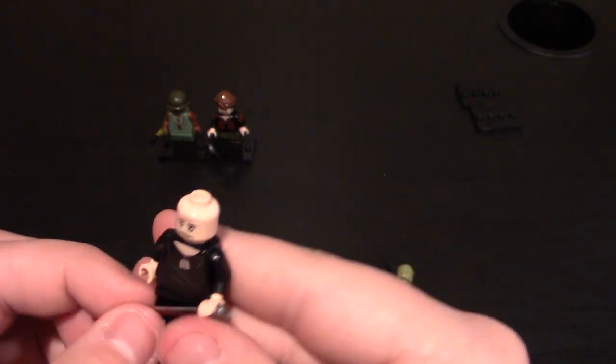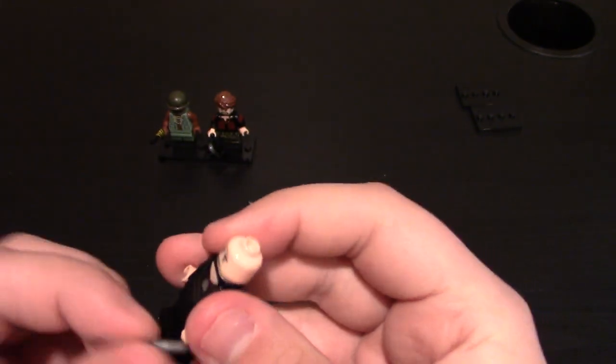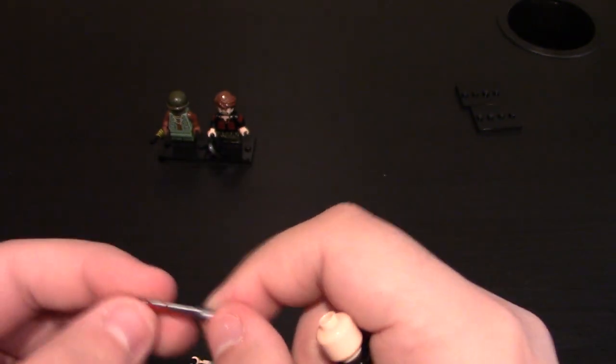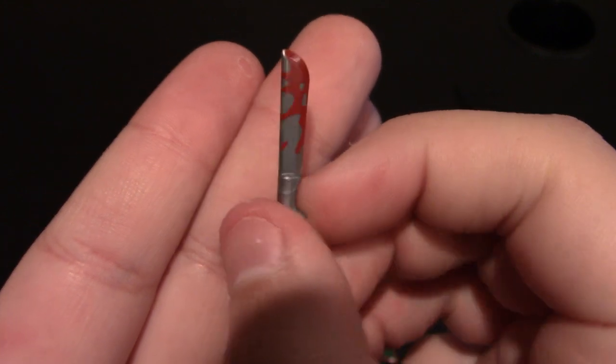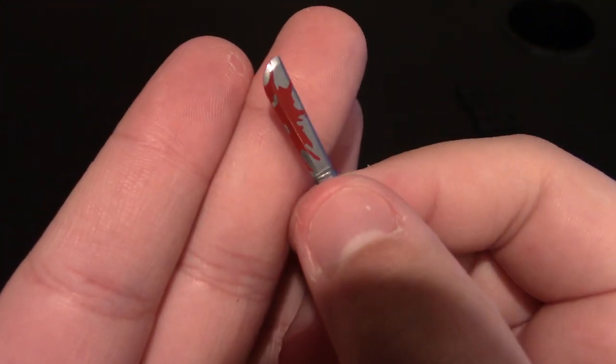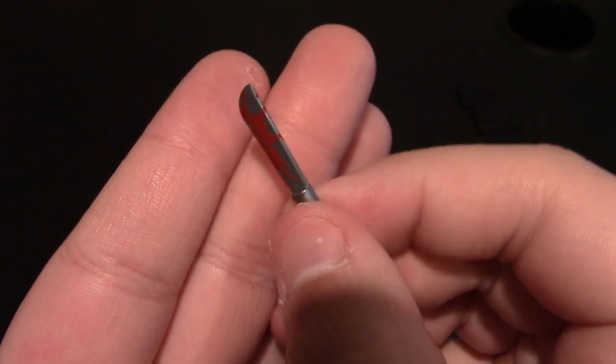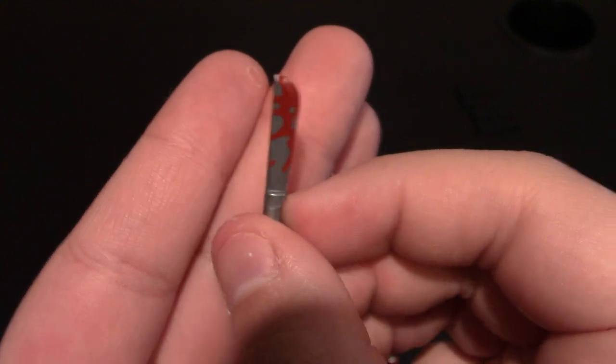Now the next guy, I don't remember his name. He comes with a Brick Arms machete which is printed on, has some blood splatter on it. They are different on both sides. Another printed Brick Arms is always cool to have.